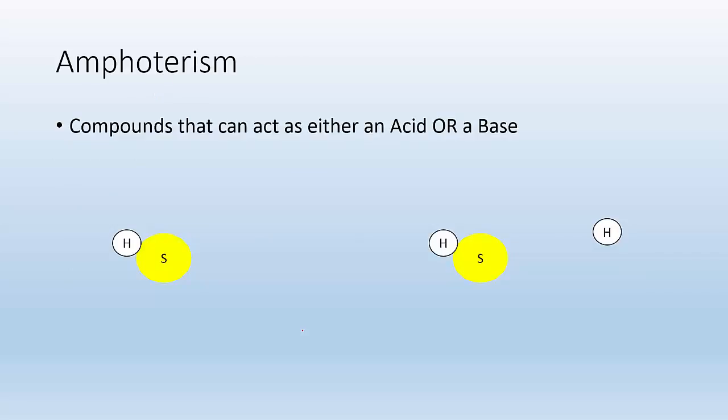Alright. Next topic is amphoterism. So there are compounds that can act as either an acid or base. So my example that I'm using right here is this ion. So it's got an H that it can kick off, which will mean it's acting as an acid. It also has unshared electrons that it can use as a base to make a bond with another proton. Alright. So boom. It can be an acid or a base. We call those things amphoteric.